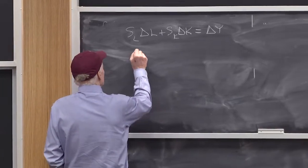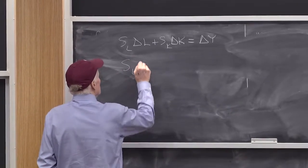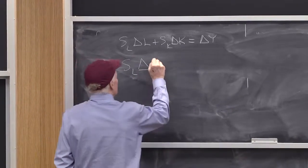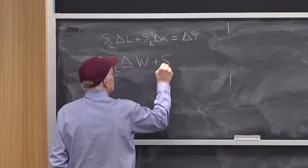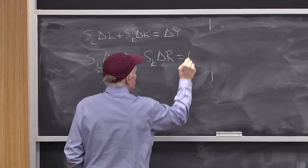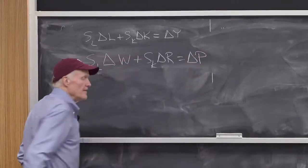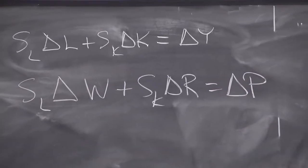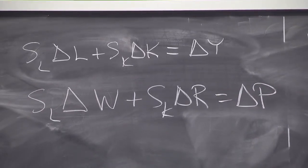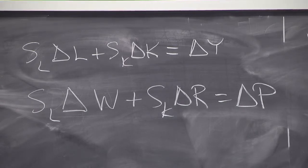We then also had SL delta W plus SK delta R has to be equal to delta P. That's a first order approximation to the cost function, assuming constant returns to scale. Now, that's important.